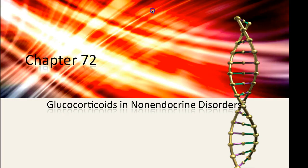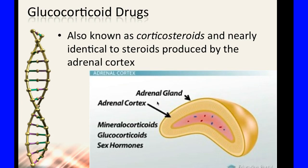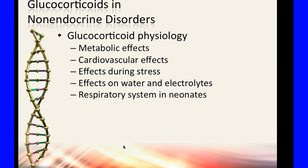Glucocorticoids and non-endocrine disorders: glucocorticoid drugs are your steroids, also known as corticosteroids, and they are nearly identical to the steroids produced in the adrenal cortex. If you dissect the adrenal gland, inside is the adrenal cortex — that's where the steroids are produced: glucocorticoids, mineralocorticoids, and sex hormones.